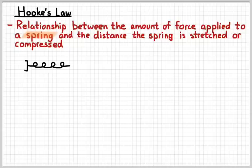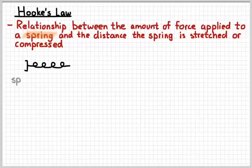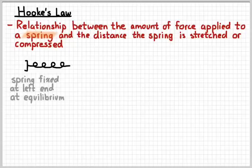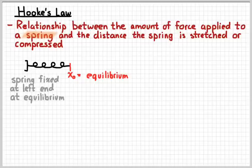So here's a drawing of a spring that is fixed at the left end. So it's like we attach it to something that's not going to move. And initially it's at equilibrium, meaning we're not pushing or pulling on it. And so when it's at equilibrium, we're going to say that its initial position or equilibrium position is just the end of the spring.